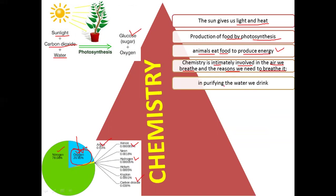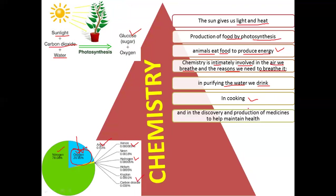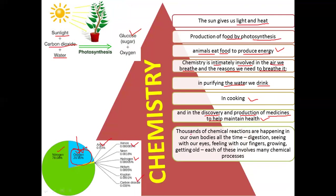With the help of chemistry we can purify water for drinking purposes — almost every household now has an RO system built because of the knowledge of chemistry. Similarly, cooking is also a series of chemical reactions by which food is cooked. Most importantly, chemistry has helped us in the discovery and production of medicines to maintain our health. Thousands of chemical reactions are happening in our own bodies all the time, like digestion, seeing with our eyes, feeling with our fingers, growing, and getting old.